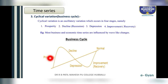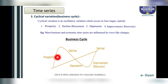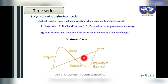This straight line is the normal line, and there is a curve here. Any business faces four stages: the first stage is prosperity, when it is in good form. Later, there is a sudden recession or decline. Because of recession, the third stage is depression. Then, after depression, there is improvement or recovery.